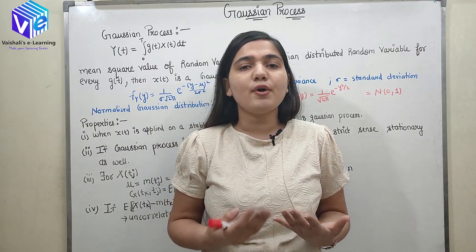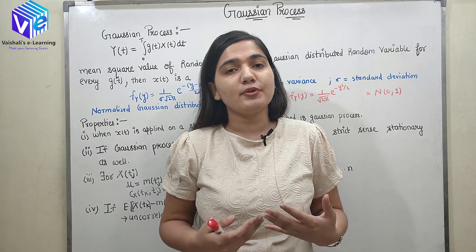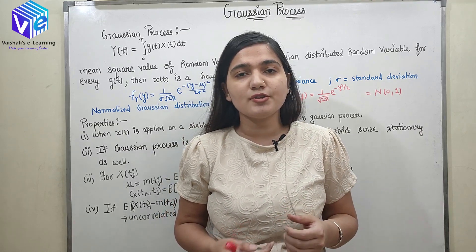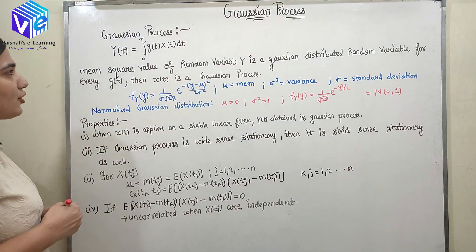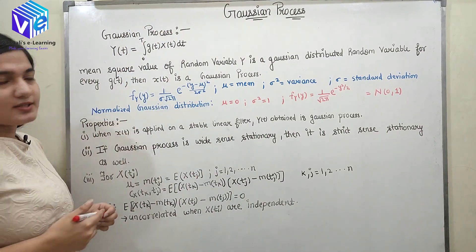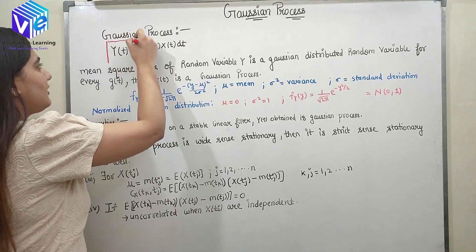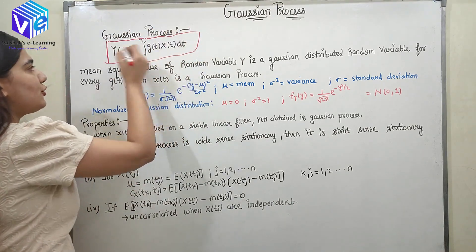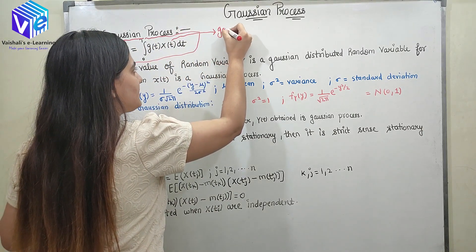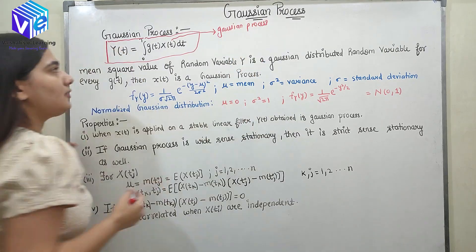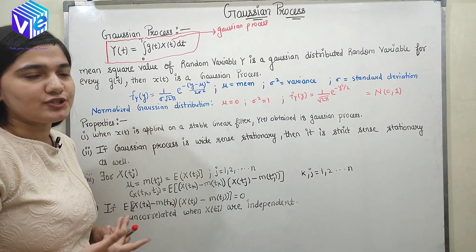First we should know what is Gaussian random process. I hope you remember what is a Gaussian distribution. You can go and watch my previous video on Gaussian distribution because without which it is not possible to understand Gaussian random process. Now coming to the Gaussian process: when I talk about the Gaussian process, this equation is satisfied for any xt to be a Gaussian process. If I consider xt to be a Gaussian process, it should satisfy this equation — then only I will call it a Gaussian process.